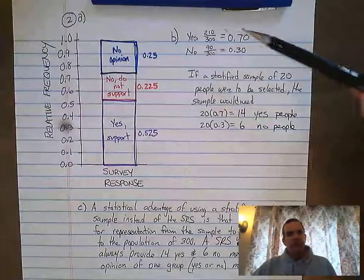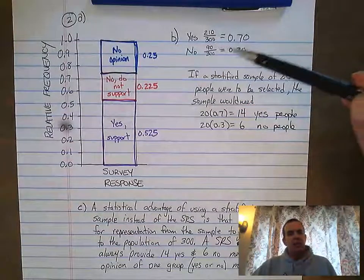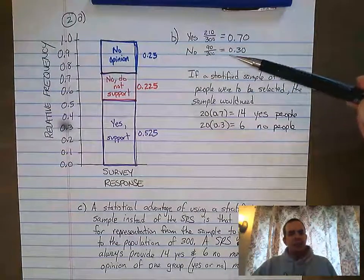So what I did is I recalculated the numbers: 210 out of 300 is 70%, 90 out of 300 is 30%.